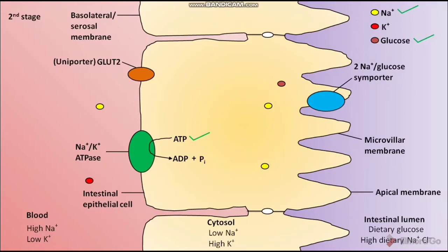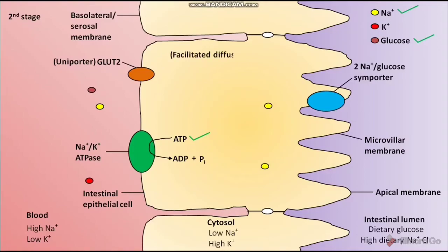The transport of glucose via GLUT2 is down the glucose concentration gradient. The transport of glucose via GLUT2 is a facilitated diffusion.